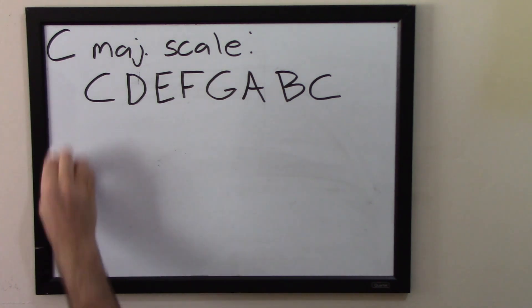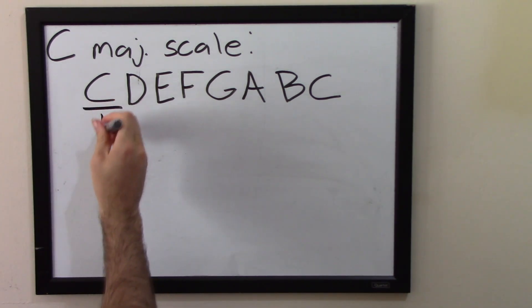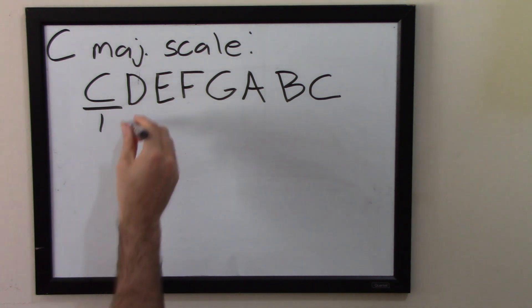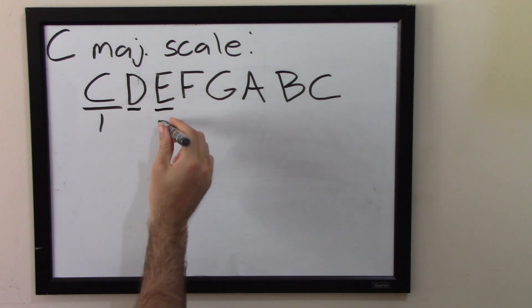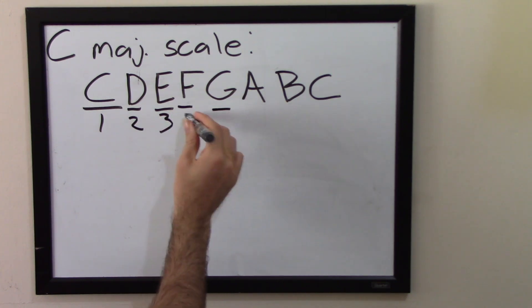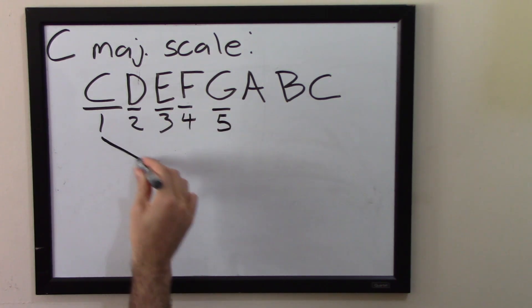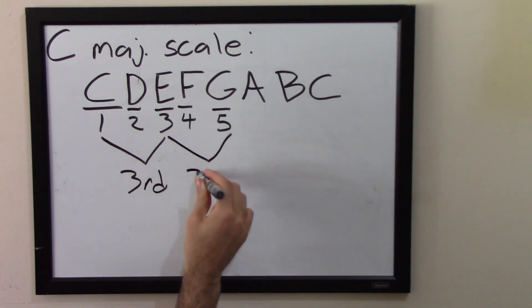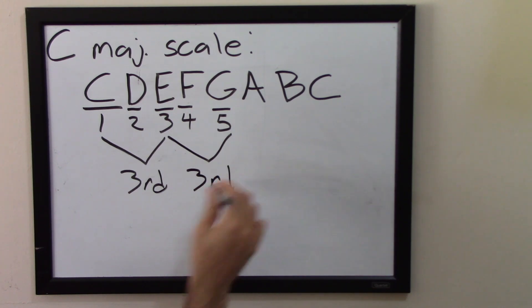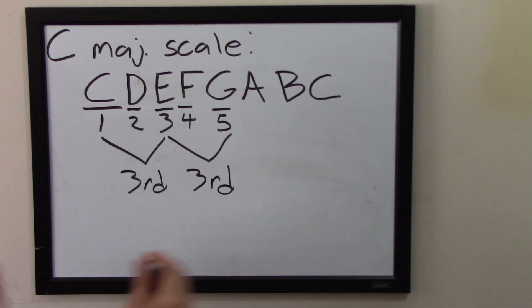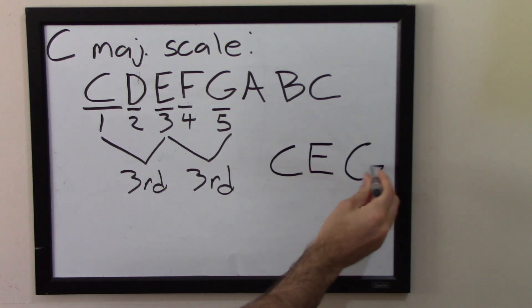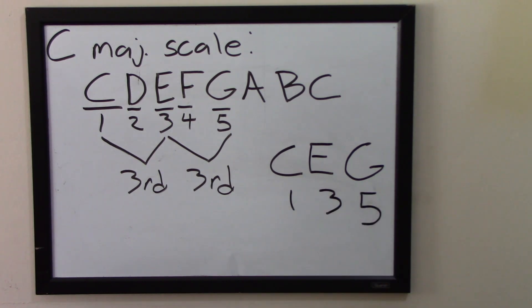We are going to take triads from the C major scale. We're going to start on the first note, which is C, and we're going to go up in thirds. So we're going to go up a third from C, and then up a third from that note, and that is going to give us a triad. You start at C, count up three: C, D, E. So you have C and E. Then from E you go up a third: E, F, G. So we have C, E, and G — the first, third, and fifth notes of the scale.